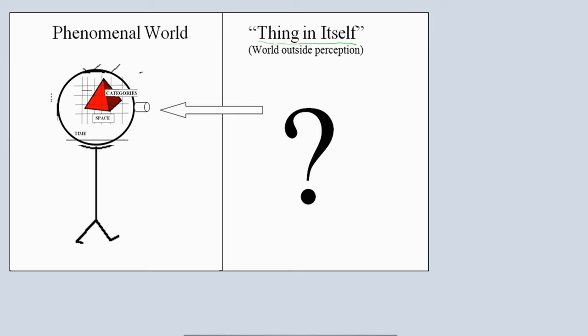What is the world before the human mind makes sense of it or the world outside of perception? And Kant's conclusion is, guess what? We just don't know. All we can ever know is how the human mind represents the world.